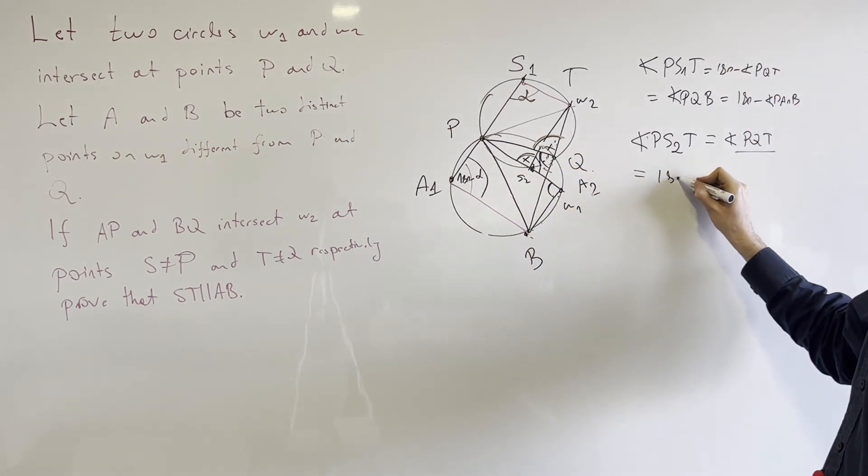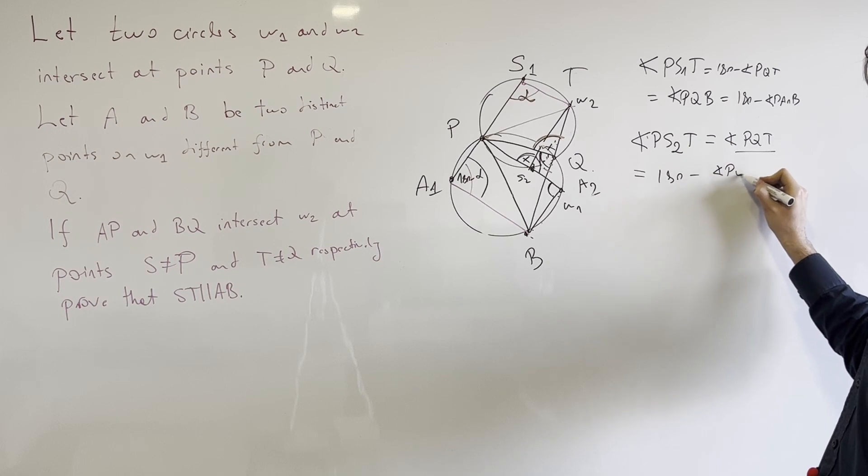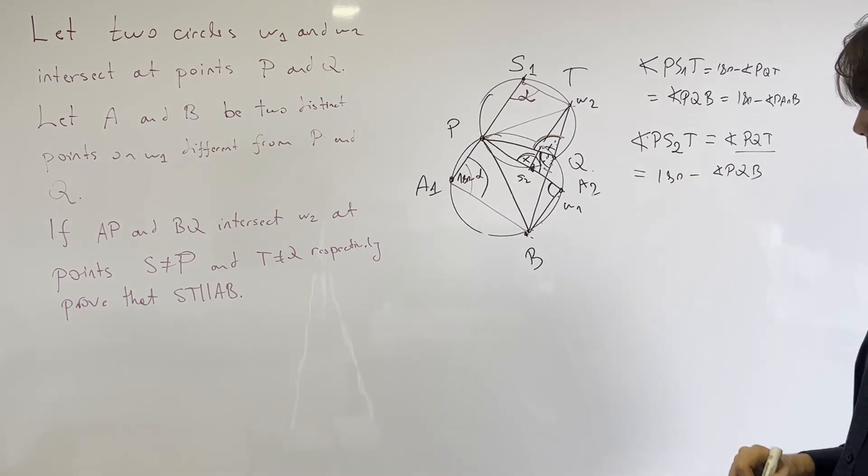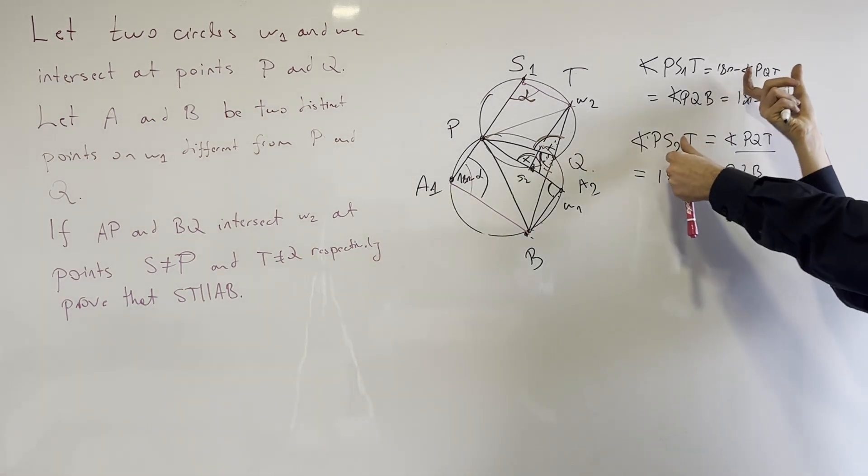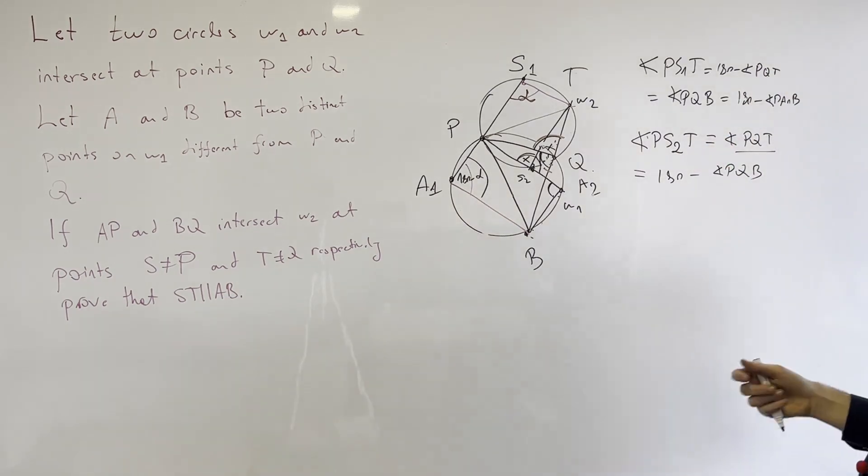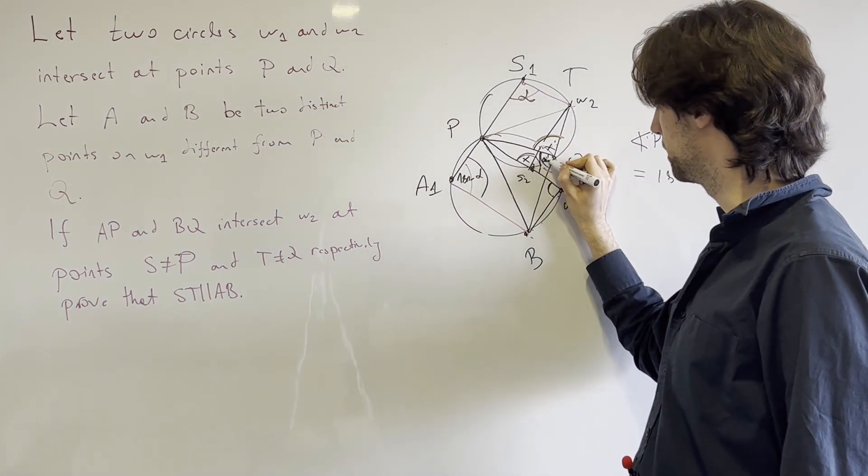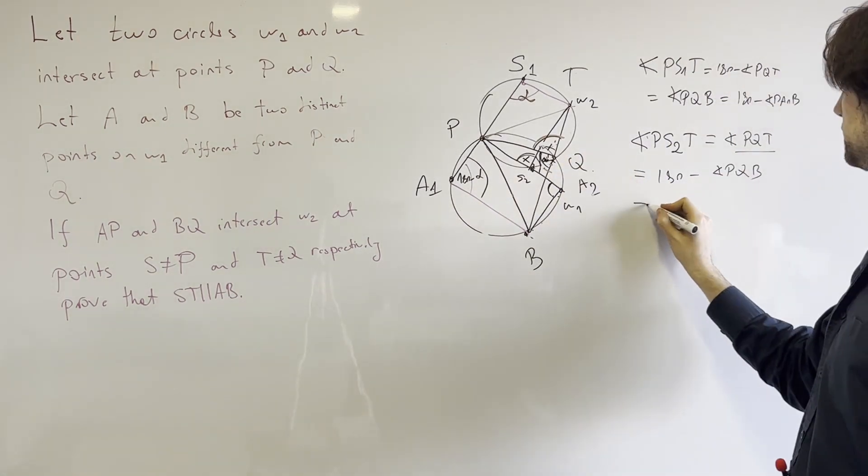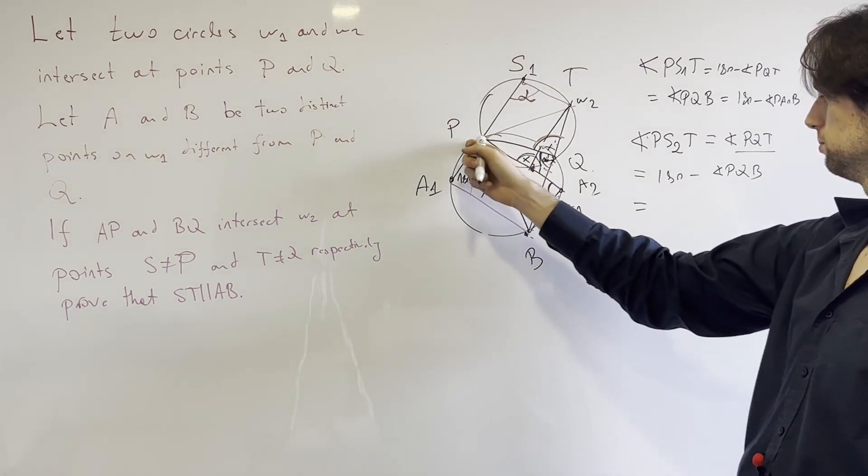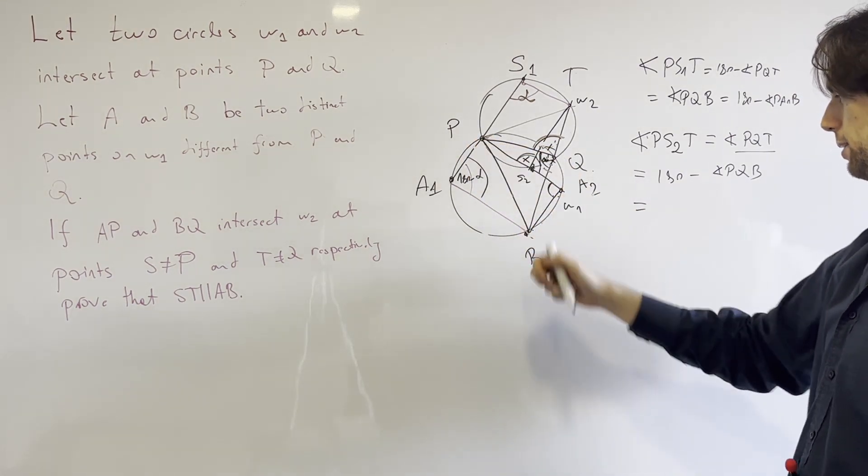And then it's 180 minus the angle PQB. All right, so these two things are changed, just switched around. So there's 180 minus x and this is equal to the angle PQB is PAB.